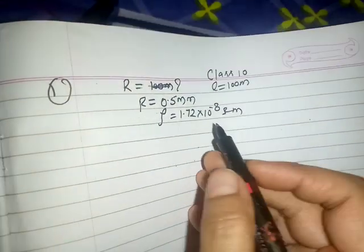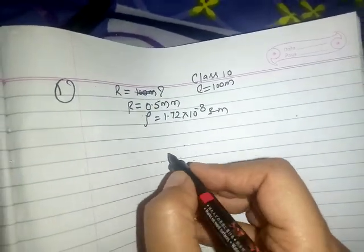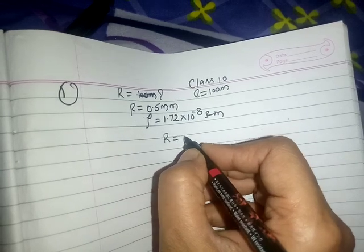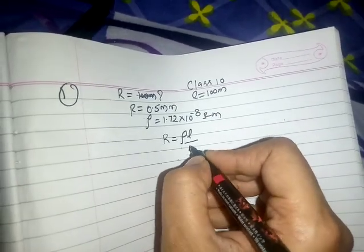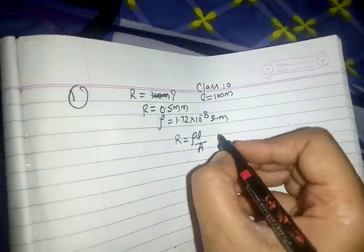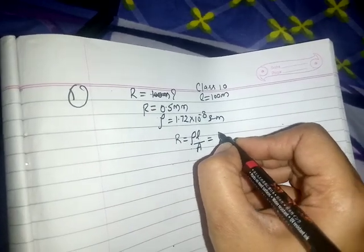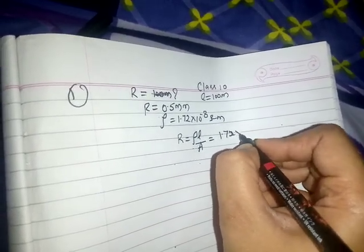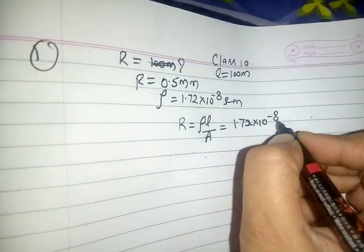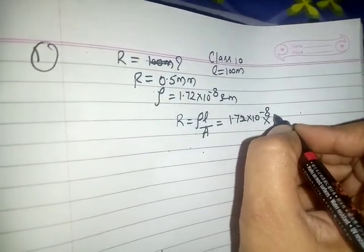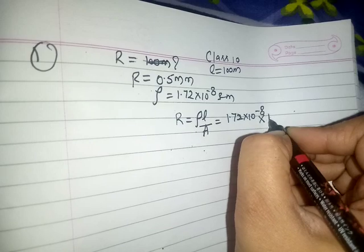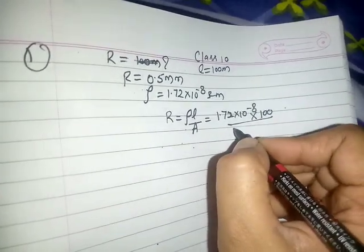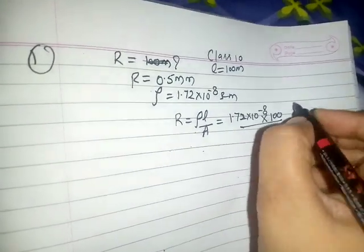You have to find the resistance. Apply the formula: R equals rho times L upon A. So rho is 1.72 into 10 to the power minus 8, the value of L is 100 meters, and area is pi r squared.